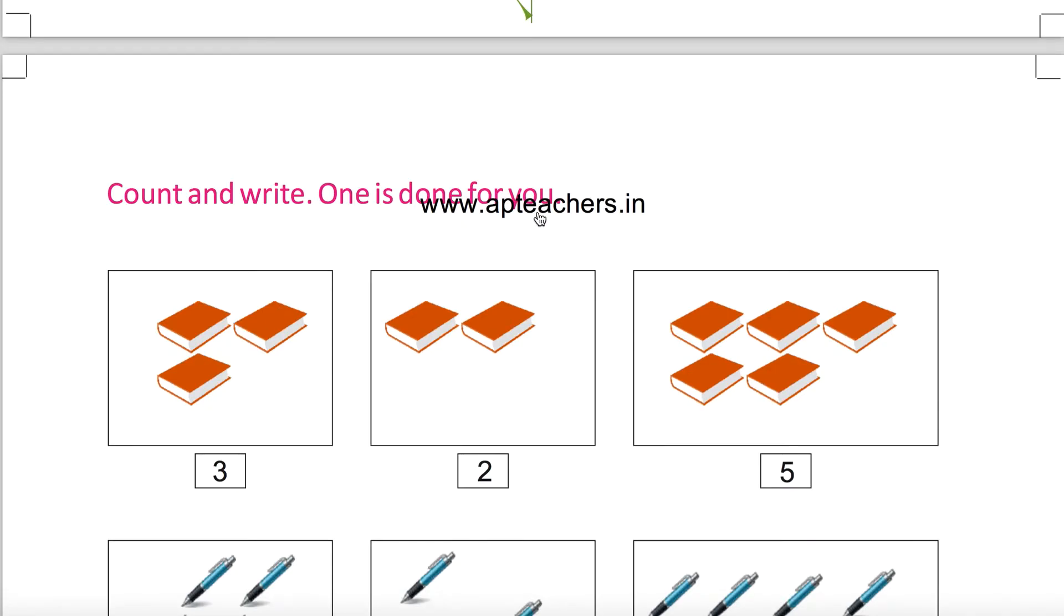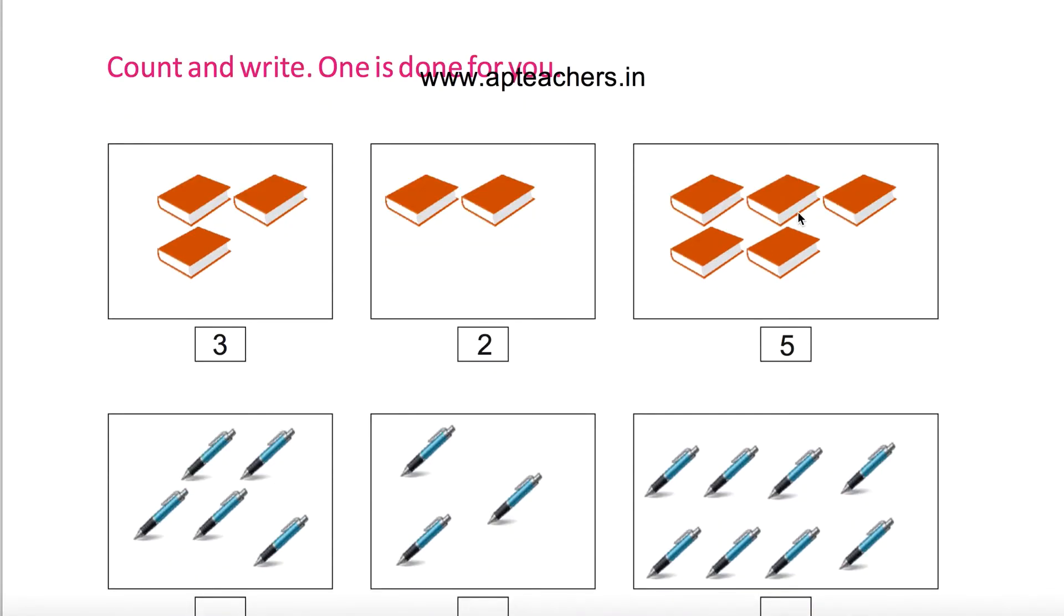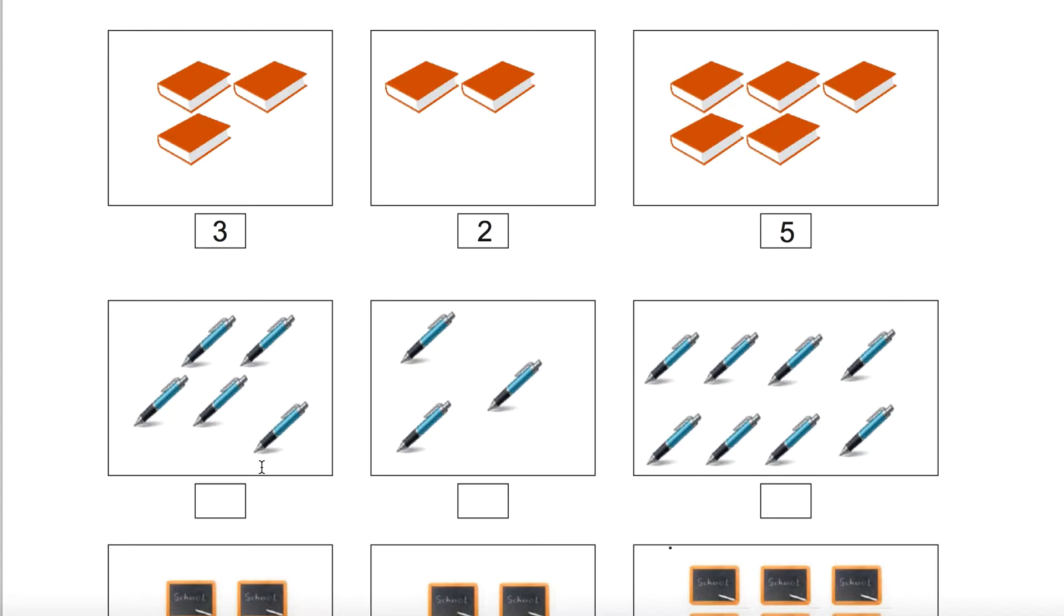Count and write. One is done for you. Three books, two books. Total: three plus two equals five. Similarly, five pens are there. Here, three pens are there. Total: five, six, seven, eight. So total is eight.